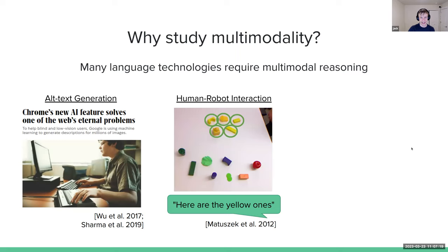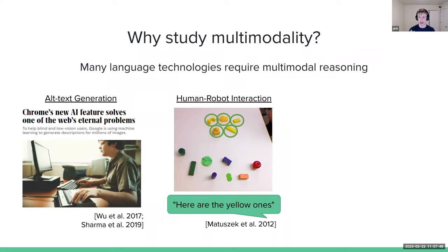Another use case is human-robot interaction. I'm told the robots are coming and will take over not only our software spaces but also our physical embodied environments. I want to be able to talk with them in natural language — say English rather than a programming language — so I could say 'here are the yellow ones' and the robot parses that and maps it onto the physical environment as interpreted by its camera.